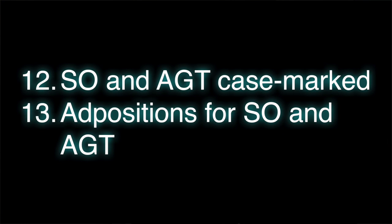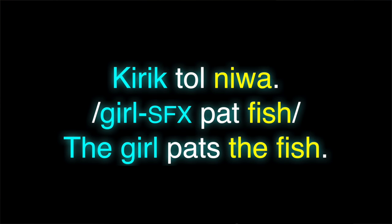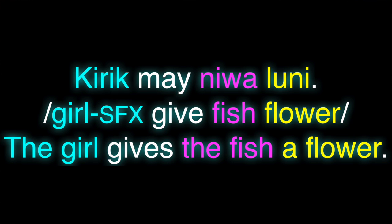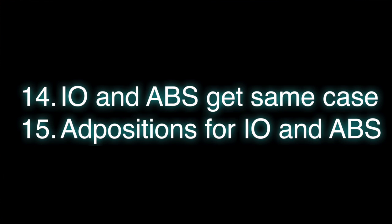Our 13th strategy would be doing all of that with adpositions. Now for our last strategy, this is basically the same marking for both objects. Our control: 'Kirik tol niwa' — still ergative for Kirik. And then for the ditransitive clause, 'Kirik mai niwa luni' — both fish and flower get absolutely no marking at all, meaning they're in the absolutive. Word order is there to determine which one is the direct object and which one is the indirect object. So that is our 14th strategy, and the 15th would be doing that with adpositions instead of case inflection.